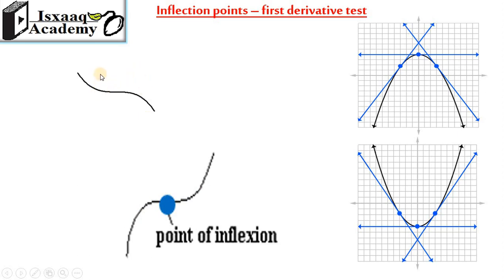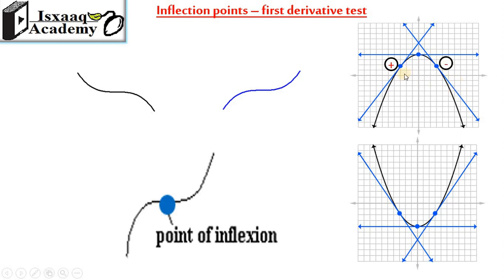If the curve is a curve, then the inflection point is on the curve. The maximum and minimum are on the curve. The effect is an inflection point.